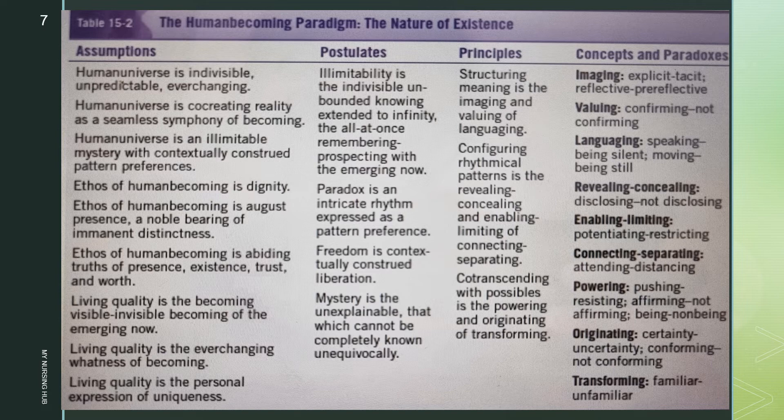The third principle is cotranscending with possibilities — the powering and originating of transforming. The meaning of this principle is that persons continuously change and unfold in life as they engage with and choose from infinite possibilities about how to be, what attitude or approach to have, whom to relate with, and what interests or concerns to explore. Choices reflect the person's way of moving and changing with the becoming visible-invisible becoming of the emerging now. The three concepts of this principle are powering, originating, and transforming.